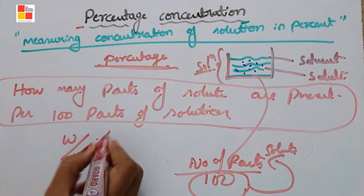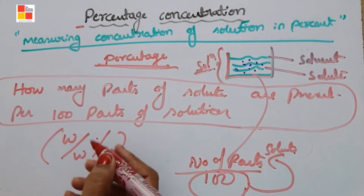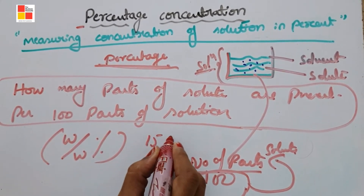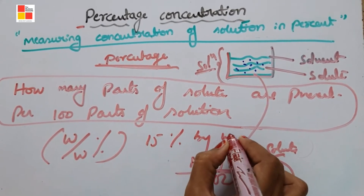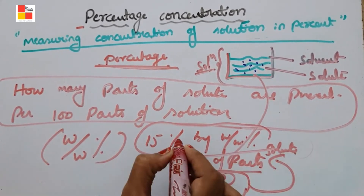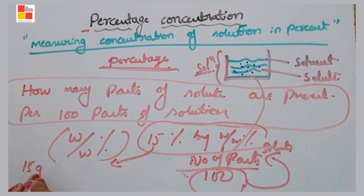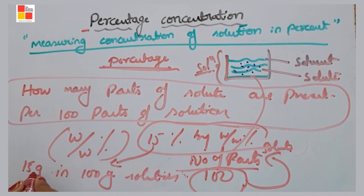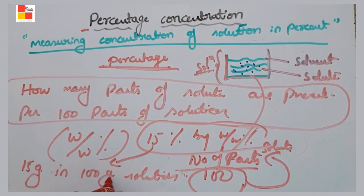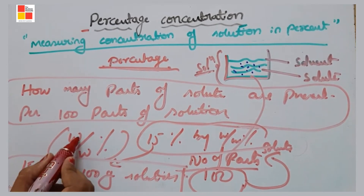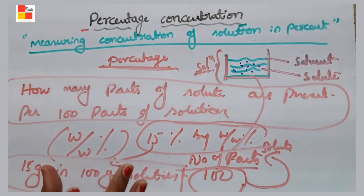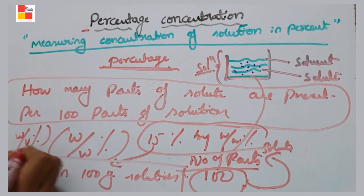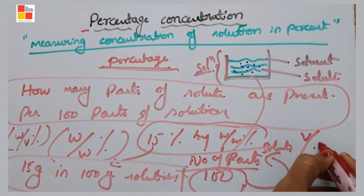You can calculate percentage concentration as weight by weight percent, weight by volume percent, and volume by volume percent. For example, weight by weight percent — 15% means 15 grams of solute present in 100 grams of solution.